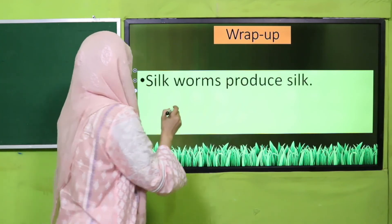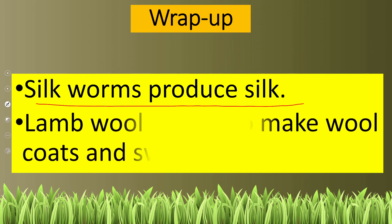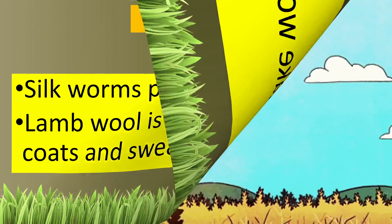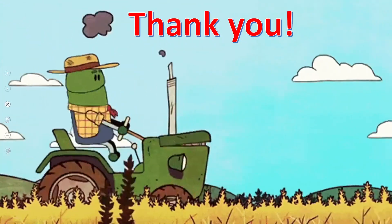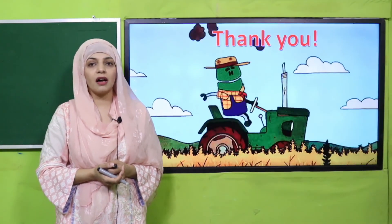Okay, so now is the time for wrap up. Silk worm produces silk. Lamb wool is used to make wool coats and sweaters. So today we have learned ke hum kahan se mukhtalif cheezhen lete hain jinse ham silk cloth aur sweaters bunte hain. I hope you enjoyed today's lecture. Keep everybody around you safe. Have a good day, thank you so much, and Allah Hafiz.